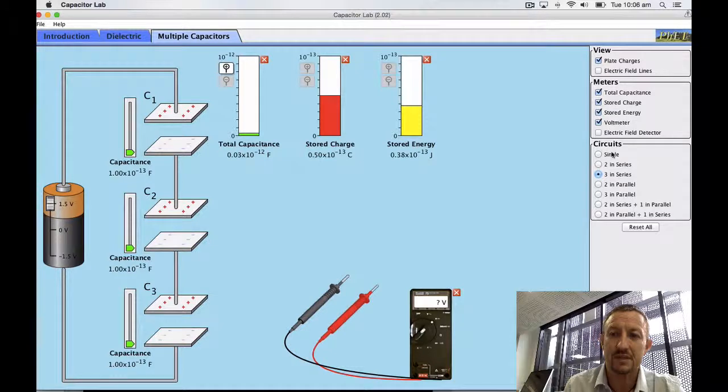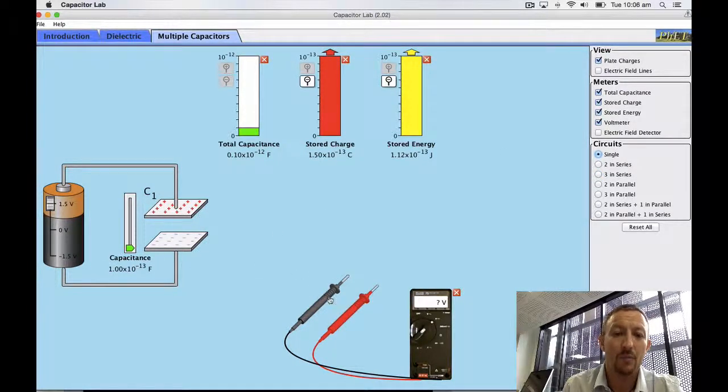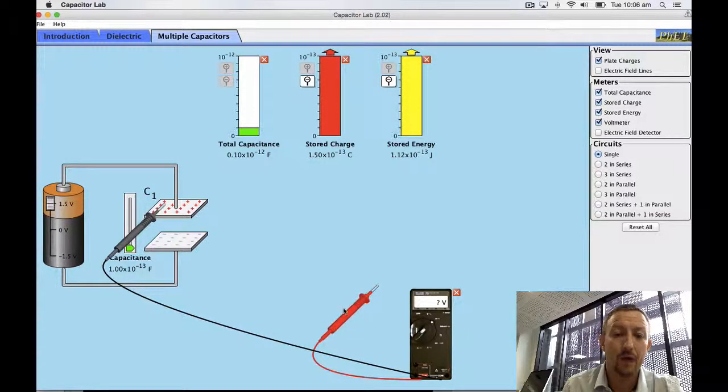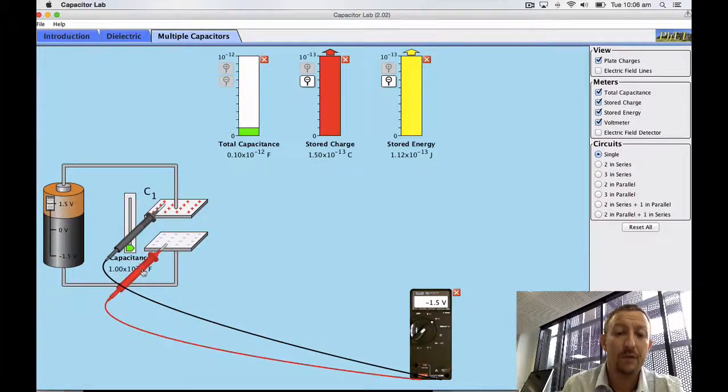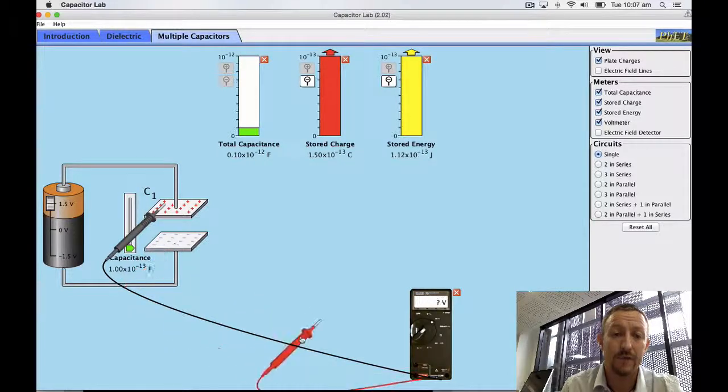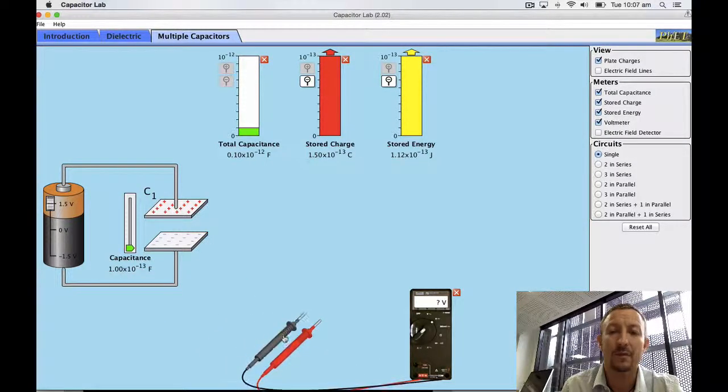So let's go back to our single. Okay, we've still got 1.5 coming through, our 1.5 volts in our capacitor, and we know that we're dealing with a total capacitance of 0.1 times 10 to the negative 12 farads. Let's see what happens when we put them in parallel.